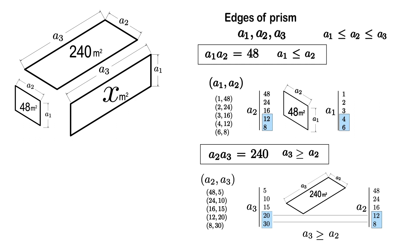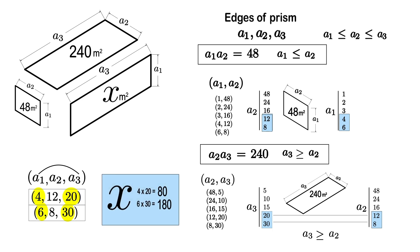Thus, the only valid triple of a1, a2 and a3 has 2 options. From this, the only possible areas of the third face are 80 and 180. So these are the desired solutions.